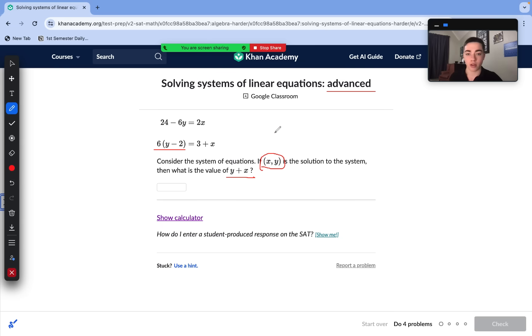First step is to distribute those terms there. It turns into 6y minus 12. Actually we subtract the 3 so negative 12 minus 3 is actually negative 15. So that bottom equation simplified is 6y minus 15 equals x. Let's switch it around to follow the format of that top equation, negative 15 plus 6y. It is the exact same thing. I can just move them around.